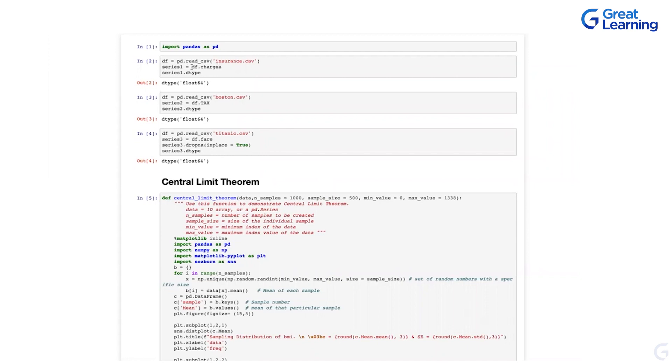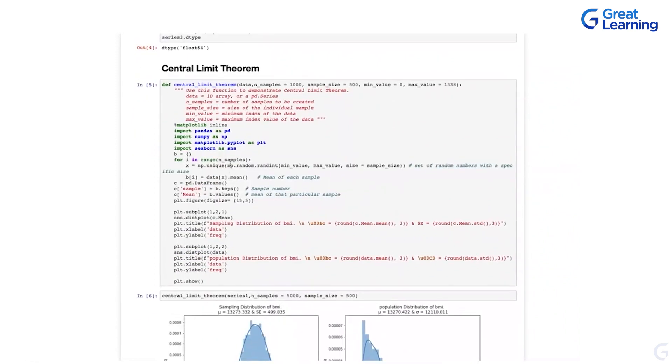We created three series for each of these things. From insurance, the charges has been converted into a series data. From Boston, taxes is taken and another series is created. From Titanic, fare is taken and a series is created. Are we clear till this point? So now we created three different series. These are completely three different variables we created, three series at the end of the day.